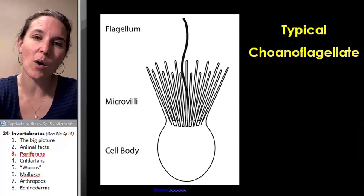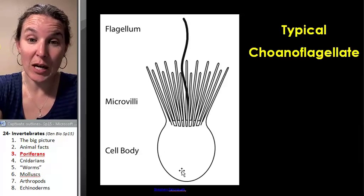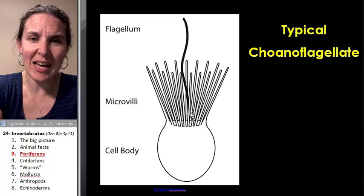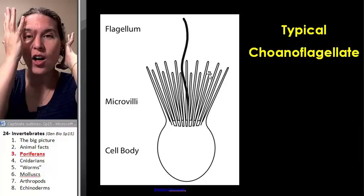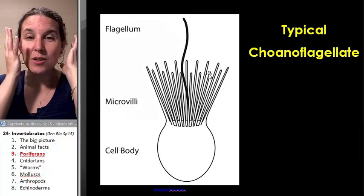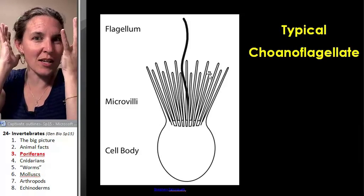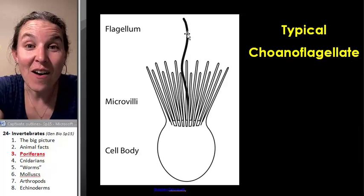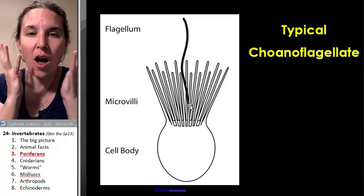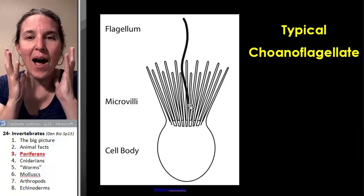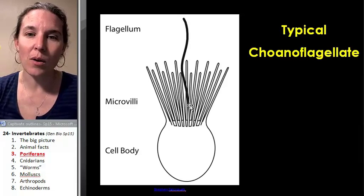Now look at that thing. This is a single-celled critter. Here's its body. It has this little frill — like a collar, a collar. In fact, we're going to see some collar cells here in a second. Don't you kind of want to wear one of those things? They have flagella, like sperm. This is like a single-celled sperm with a collar. I bet if our sperm saw those, they'd be like, 'Dude, why don't I have a collar?'